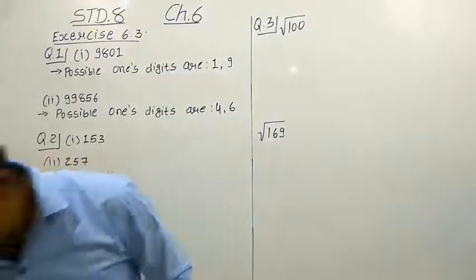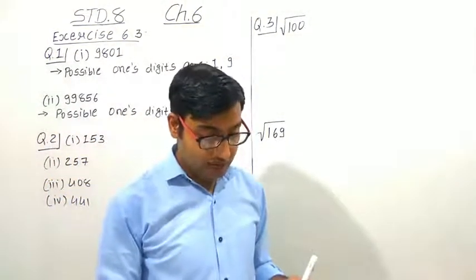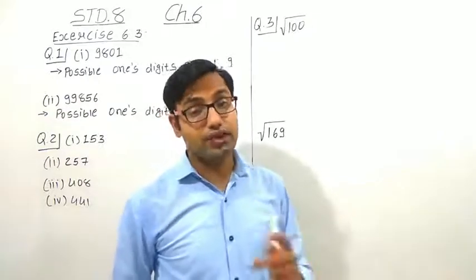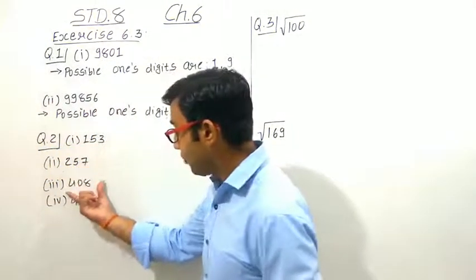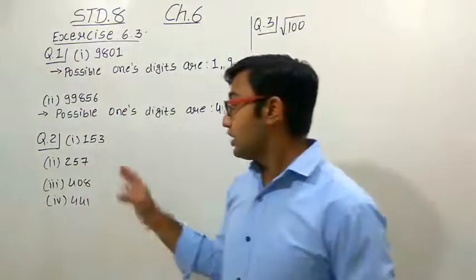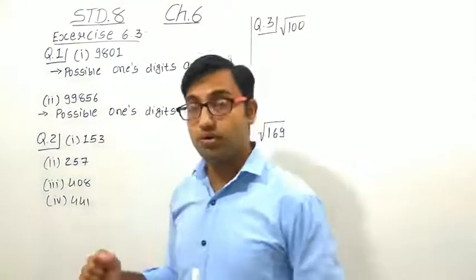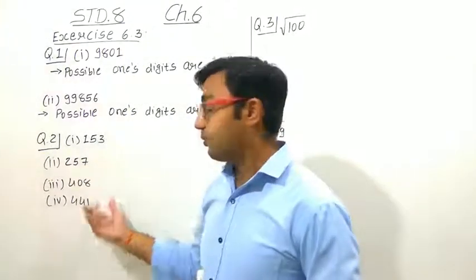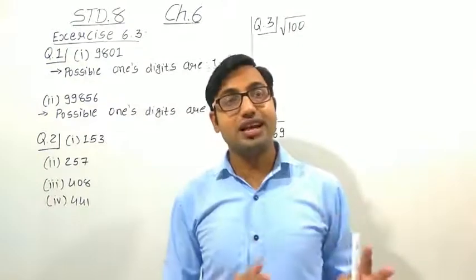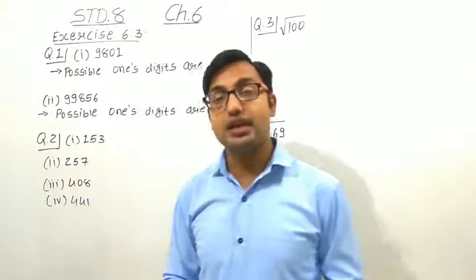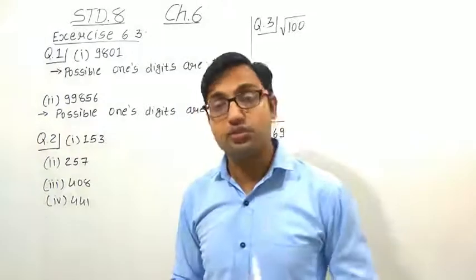Now let us study question number 2. The question is: without doing any calculation, find the numbers which are surely not perfect square numbers. We have given four different numbers: 153, 257, 408, and 441. Remember the property that whenever there is a 2, 3, 7, or 8 at the unit place, that number cannot be a perfect square number.